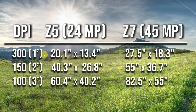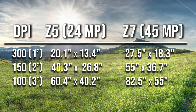At 300 DPI — for something viewed at about a foot away — the Z7 only gives us about seven more inches in width and five inches in height over the Z5. That's typically printed material people are holding in their hands, like magazines or books, where 300 DPI is requested because people view it so close. But once we move to 150 DPI, which is very sharp at just two feet away for 20/20 vision, we basically double what we can do in print width — up to 40 inches by over two feet with just the 24 megapixel camera.